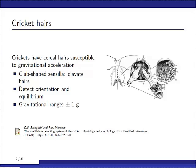And it turns out that the cricket uses these hairs to detect the orientation of itself and also equilibrium, and it does that based on gravitational acceleration.